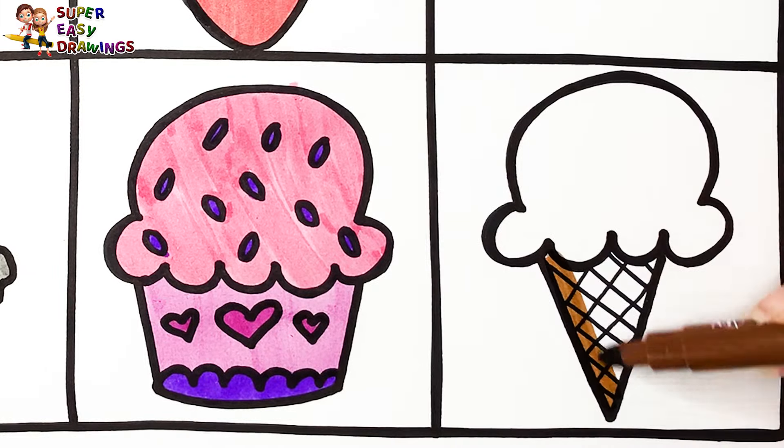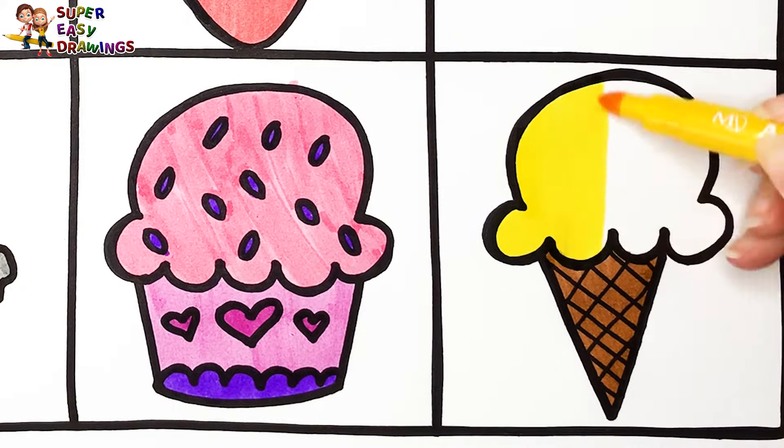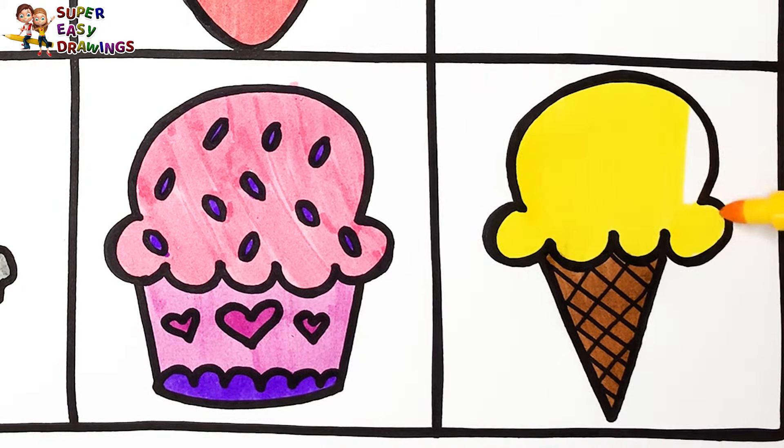I color the ice cream cone brown. Then I use yellow for the ice cream. Tastes like vanilla. Yummy!